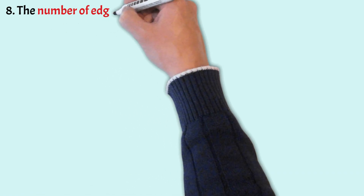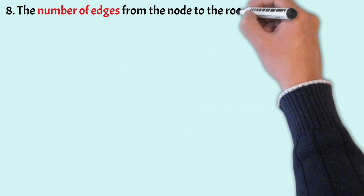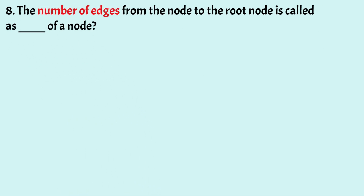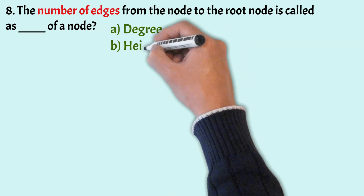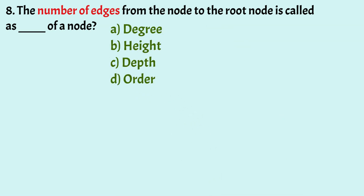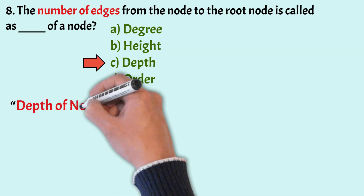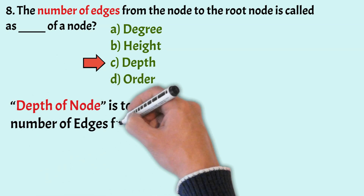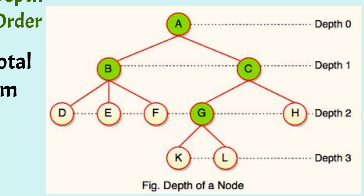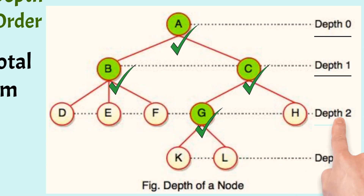The next question is: the number of edges from the node to the root node is called the dash of a node. The options are: degree, height, depth, order. The correct option is Option C, that is depth. In any tree, the depth of a node is the total number of edges from the root to that node. In this example, the depth of A is 0, the depth of B and C is 1, and the depth of G is 2.